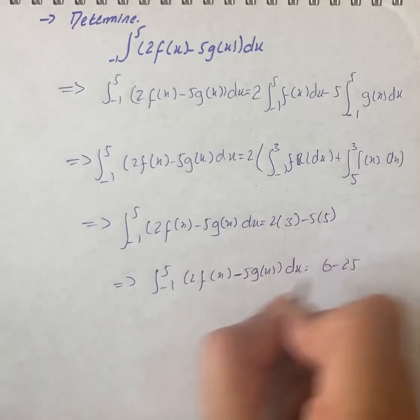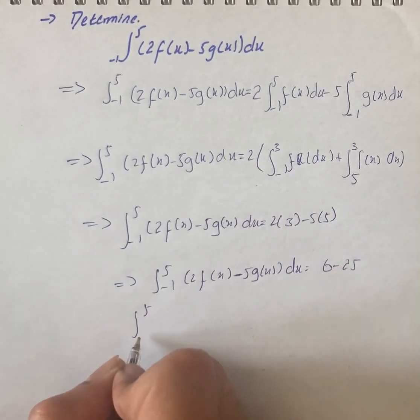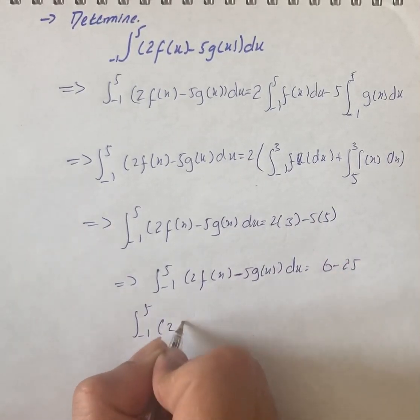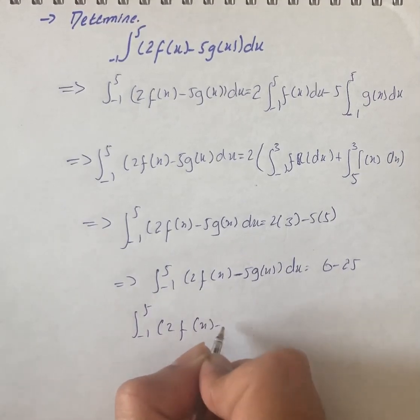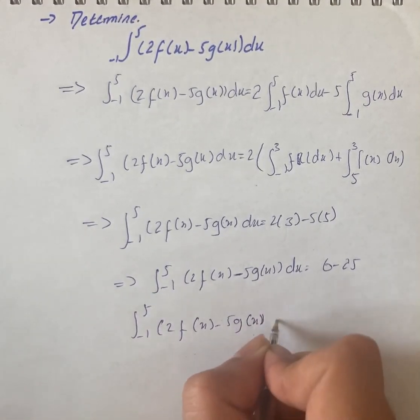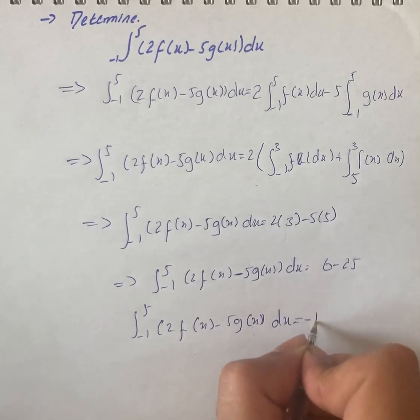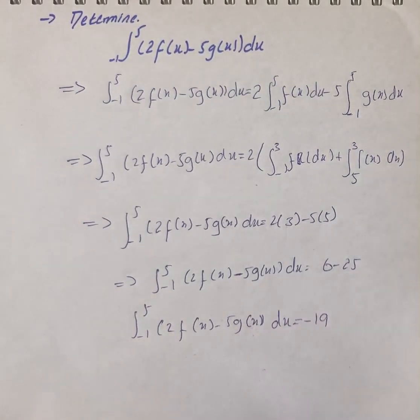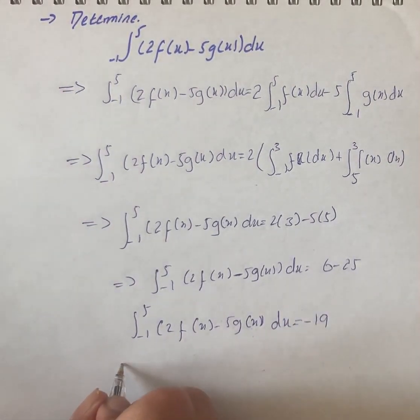So we have ∫[1,5](2f(x) - 5g(x))dx is equal to 6 minus 25, so ∫[1,5](2f(x) - 5g(x))dx is equal to minus 19.